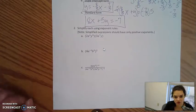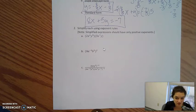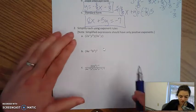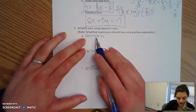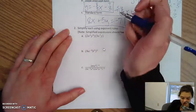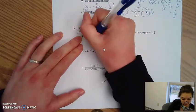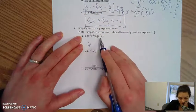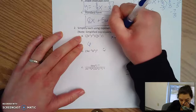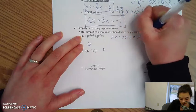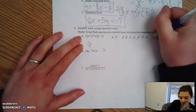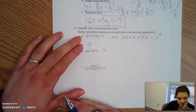Switching gears — number 2 is all about exponent rules. Simplified expressions should have only positive exponents, so if you have any negative exponents we'll have to deal with them. The first one is pretty straightforward — everything's just multiplied together: 2x squared y to the fifth times 3x to the seventh y. Multiplying 2 times 3 gives 6. Then multiplying x squared times x to the seventh — x squared is 2 x's and x to the seventh is 7 x's — so all in all that's 9 x's multiplied together, or x to the ninth.